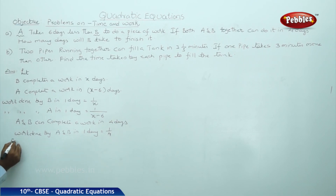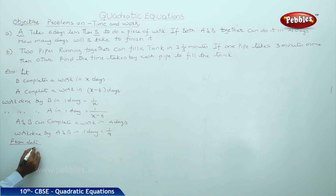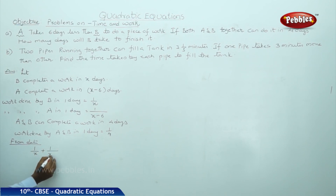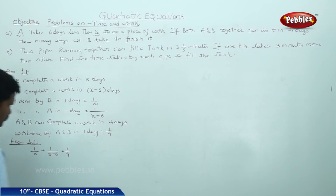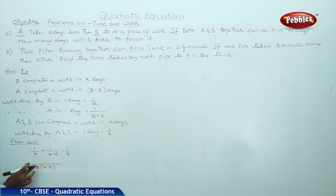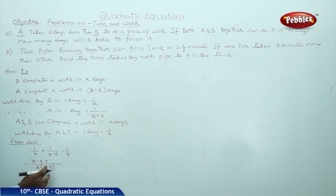Now, from the data: 1 by X plus 1 by X minus 6 is equal to 1 by 4. Taking X into X minus 6 as LCM, X cancels and X minus 6 cancels, giving X minus 6 plus X over X into X minus 6 is equal to 1 by 4.